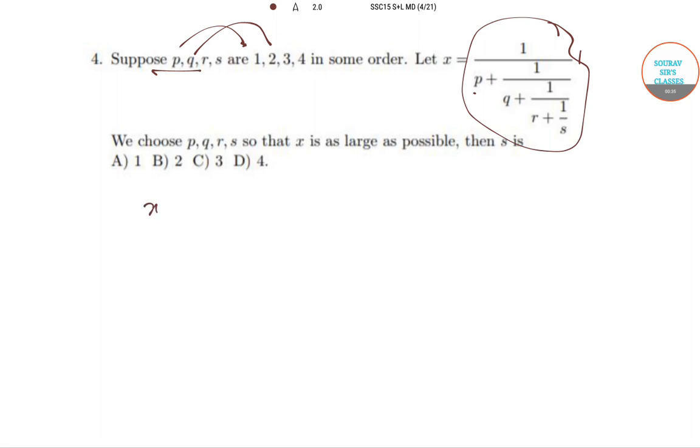So for x to be largest, for x to be max, p should be minimum of 1, 2, 3, 4. Q should be maximum of 1, 2, 3, 4. R should be minimum of 2, 3, and s should be maximum of 2, 3. So these are the formational structures.